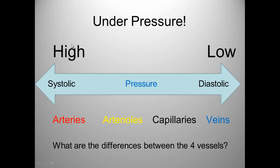We can look at what the pressure is like between different blood vessels. The ones with the highest pressure would be the arteries, then the arterioles, then the capillaries, then the venules, and finally the veins. This shows that the further the distance away from the heart, the lower the pressure.